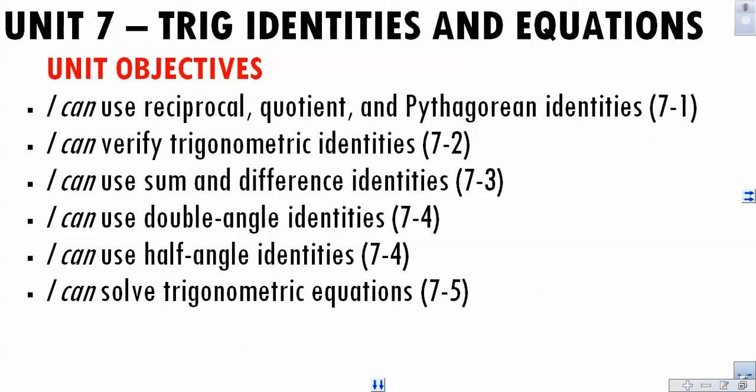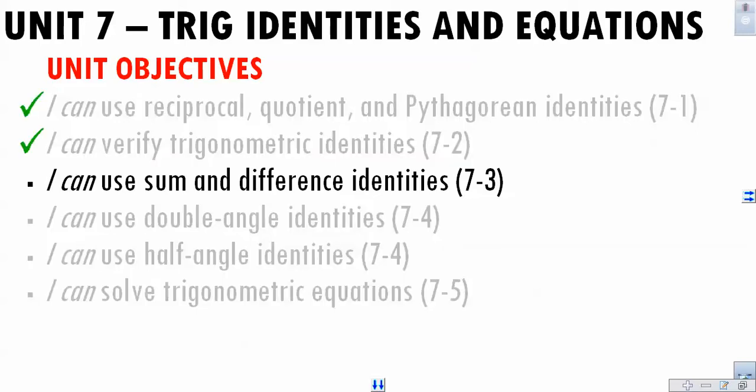Let's take a look at 7-3. In 7-3 we're going to be looking at using sums and difference identities in order to simplify and find exact trig ratios.